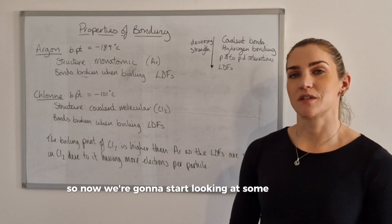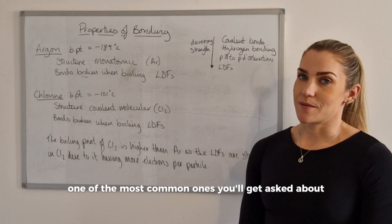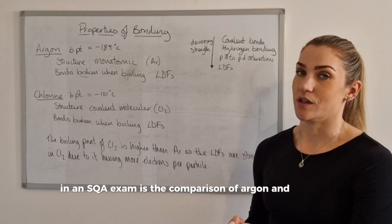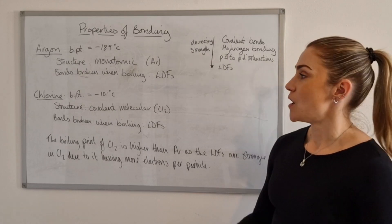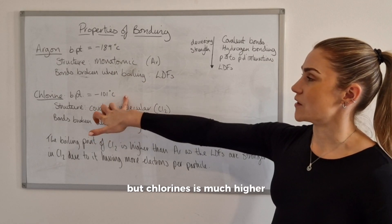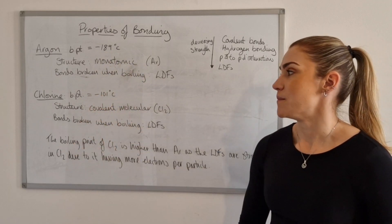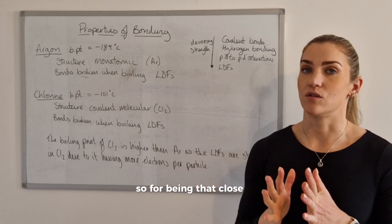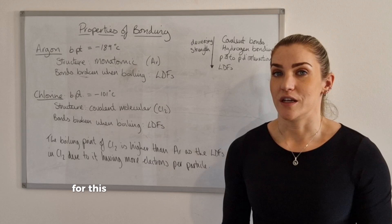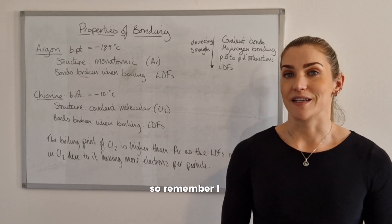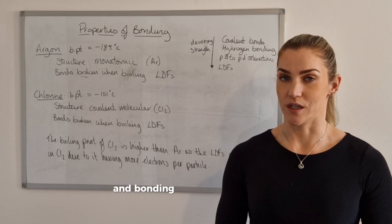Now we're going to start looking at some substances and compare their melting and boiling points. One of the most common comparisons in the SQA exam is argon and chlorine. They are right next to each other on the periodic table so you'd expect their boiling points to be very similar, but chlorine's is much higher than argon's — argon is minus 189°C whereas chlorine is minus 101°C. That's quite a big difference for elements so close together on the periodic table. The reason comes down to their structure and bonding.